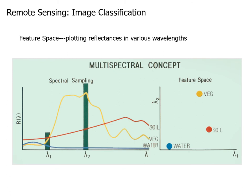Now we'll talk about feature spaces. The way we've talked about spectral qualities so far has largely used the idea of a spectral signature. Here we have three different surface types — soils, vegetation, and water — and the continuous spectral signature showing reflectance as a function of wavelength. We have two bands, band one and band two, and we figure out how bright the reflectance is in each of those bands. The sensor comes up with a number telling us how reflective a particular pixel is for each wavelength. That's the spectral space.